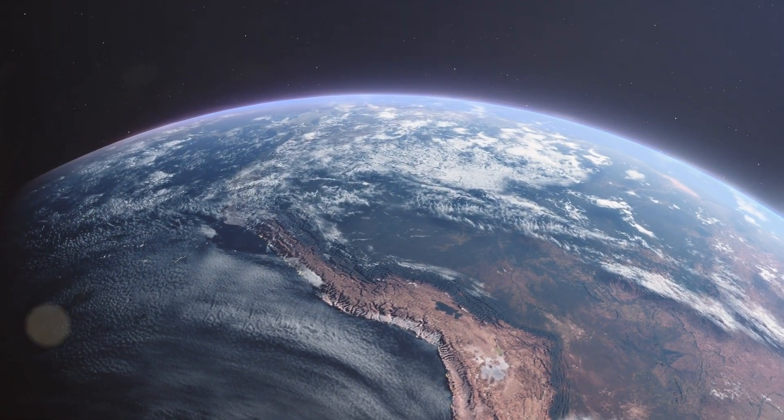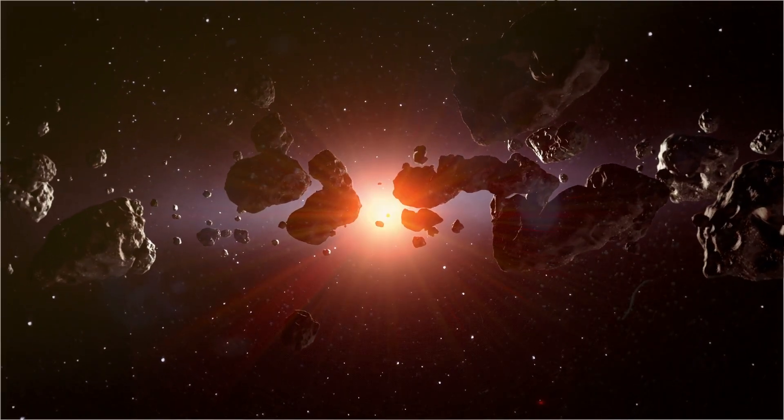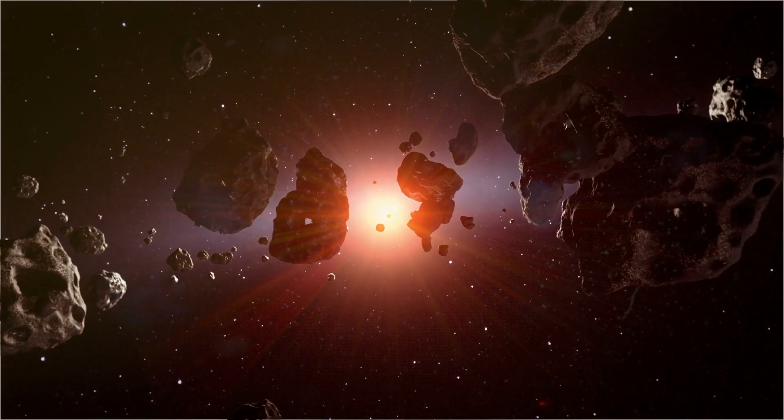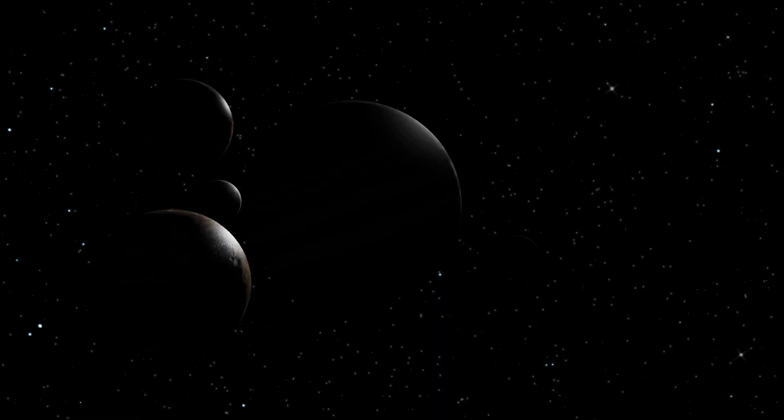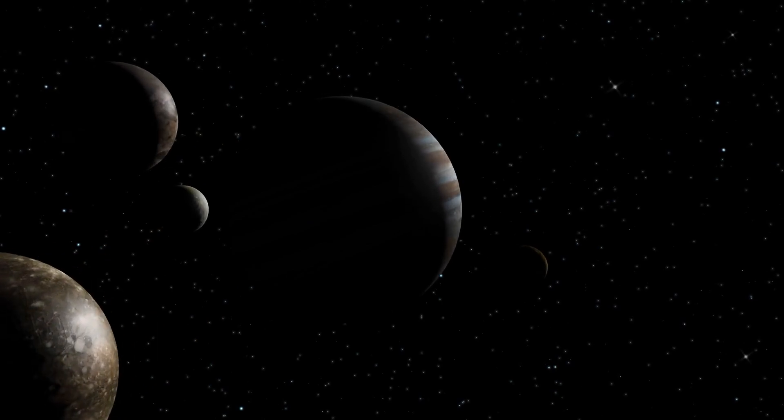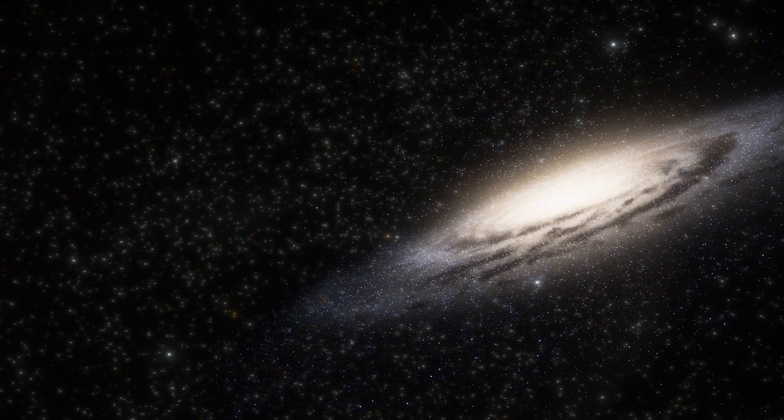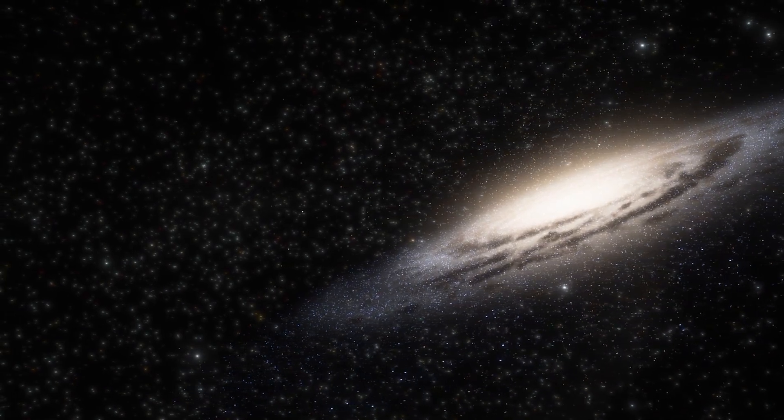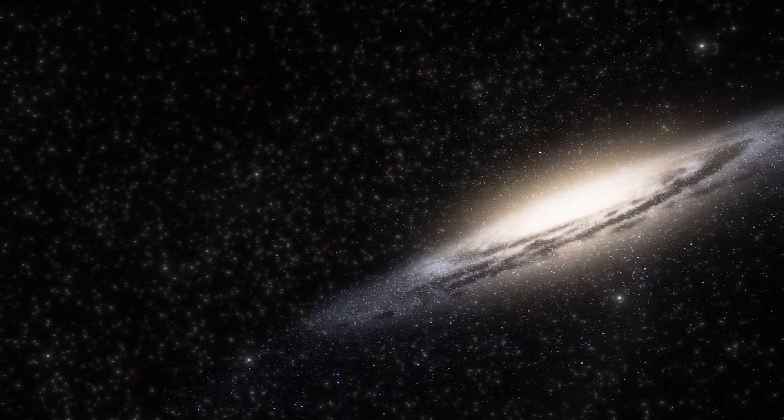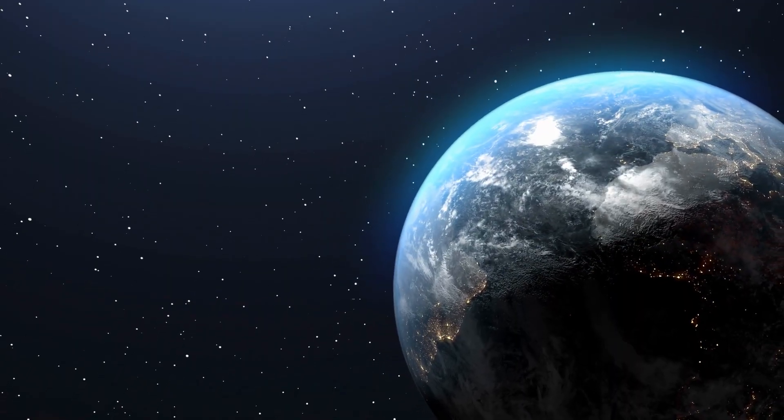Imagine a cosmic mirage. When a rogue planet passes in front of a distant star, its gravity bends the starlight, creating a temporary brightening effect. It's like a cosmic magnifying glass, revealing the presence of these invisible wanderers. While this technique is still relatively new, it's rapidly evolving. With each passing year, we're learning more and more about these mysterious objects. As we peer deeper into the cosmos, we're uncovering the secrets of the universe, one rogue planet at a time.